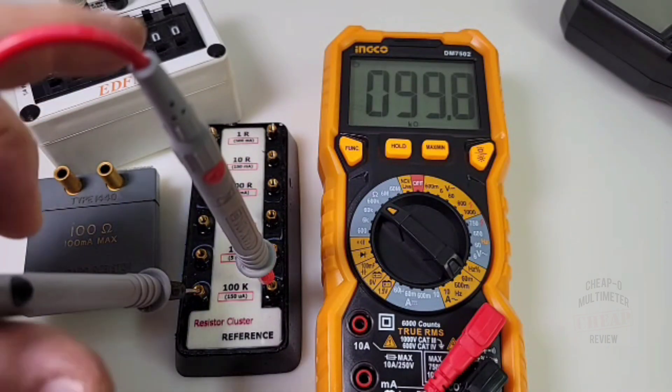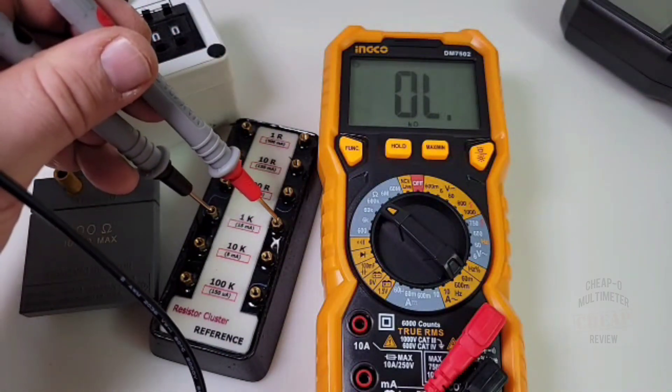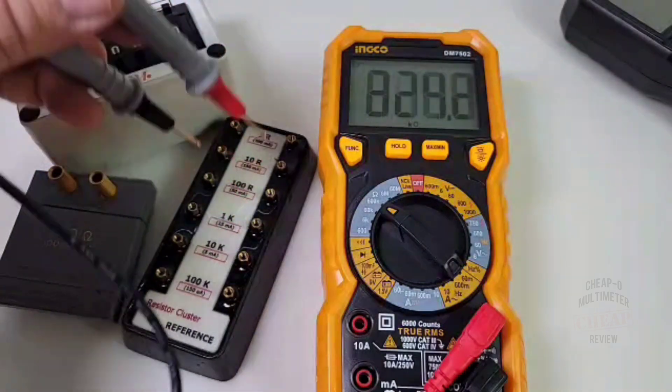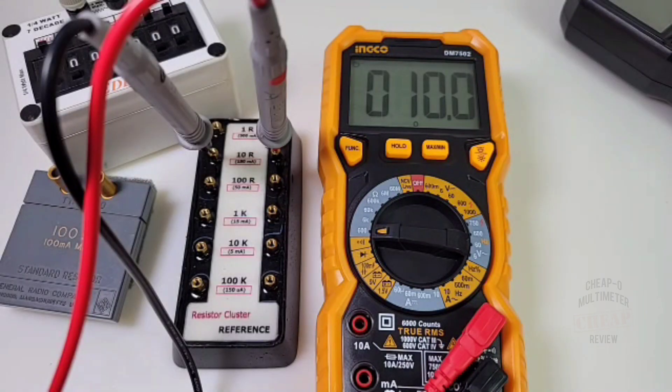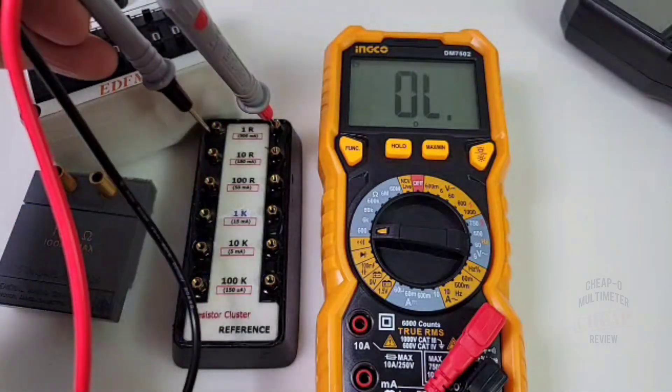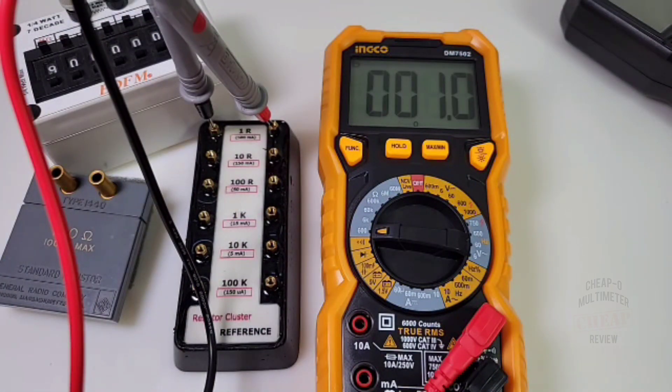100K coming up is 99.8. Oh, that is really accurate. Let's go right to the 1K, shall we? 1.0. Beauty. And let's try 10 ohm. Oh, yeah. And sitting at 10 ohm right now, you can't do much better than that. Well, finally, let's try 1 ohm. Hey, why not? Wow. 1.0 ohm. This is definitely one accurate little beast. Loving it.